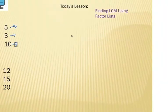Here we're trying to find the least common multiple of 5, 3, and 10. Let's kind of go backwards here. Let's look at the M - M for multiples. Let's go ahead and list out multiples.